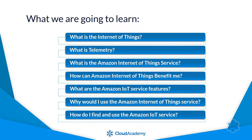So, what are we going to learn in this course? We'll describe the Internet of Things, or IoT, and talk about the concept of telemetry. Next, we'll relate those concepts to the Amazon Internet of Things service. We'll talk about the benefits of the service and its wide range of features. Next, we'll talk about how and why we would use the Amazon Internet of Things service. And finally, we'll look at a simple scenario using the IoT service.